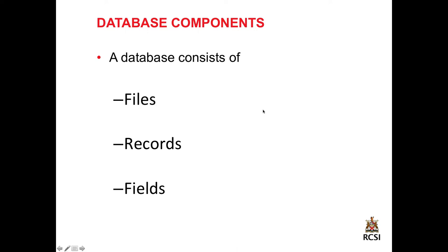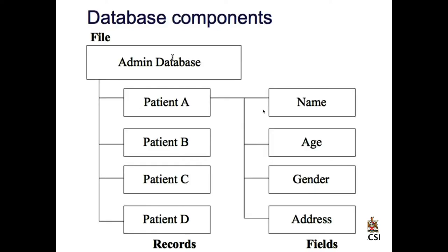The components of a database — there are three things: files, records, and fields. The database file itself contains all the information you enter and work with. It contains information about the fields, their definition, what type of data has been entered — is it controlled data such as gender, where there can only be male or female? There can only be certain ranges of data, say for blood pressure. The file also contains information on access privilege: which user can see what information, edit, or whatever they need to do.